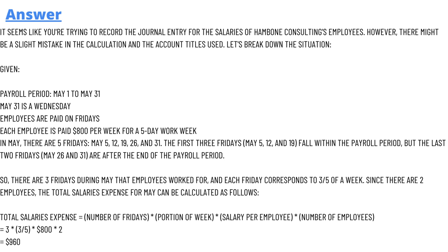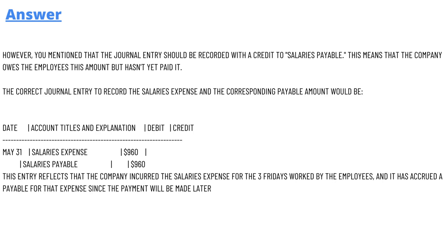The payroll period runs from May 1 to May 31st. Each employee is paid $800 for 5 weeks, and in May the Fridays fall on the 5th, 12th, 19th, 26th, and 31st. The first 3 Fridays fall within the payroll period, but the last 2 Fridays are at the end of the payroll. The total expense is calculated as 3 divided by 5, multiplied by $800, multiplied by 2.